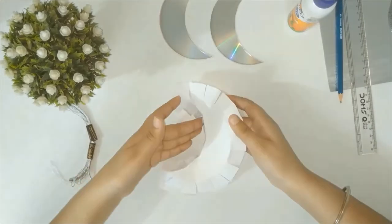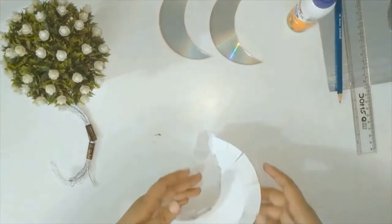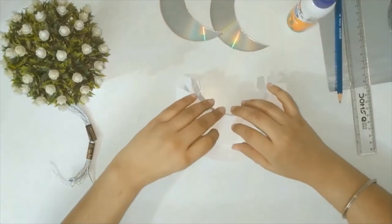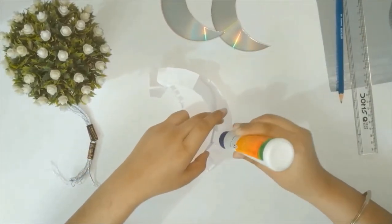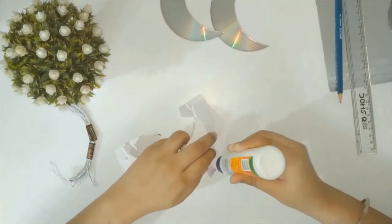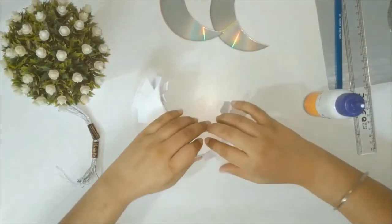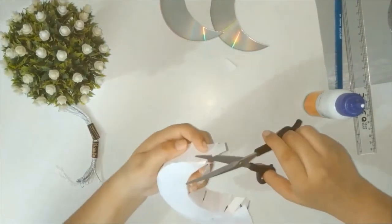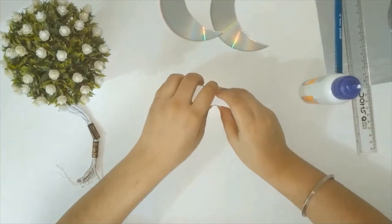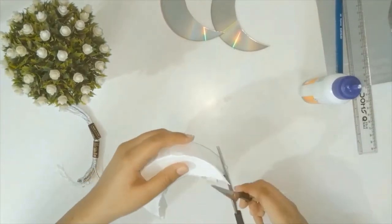We are going to paste both templates together so that we have a 3D moon which has some depth. I cut out those slits because it will make it easy for us to paste them together. Since it is curvy, it will be easier to paste the two moons together.